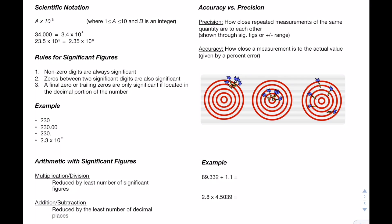Next, we'll be covering scientific notation, which is just a way of writing numbers in a more concise manner and showing how precise the numbers are. A times 10 to the B is scientific notation, where A is a number between 1 and 10, and B is an integer. So for example, 34,000 written in scientific notation would be 3.4 times 10 to the 4th. 3.4 is a number between 1 and 10, and in order to make 3.4 equal 34,000, we would have to move the decimal over four places to the right. Therefore, we multiply by 10 to the 4th.